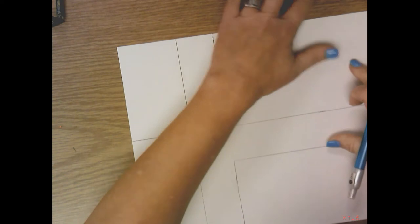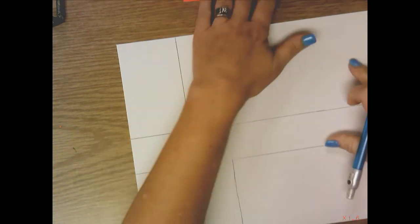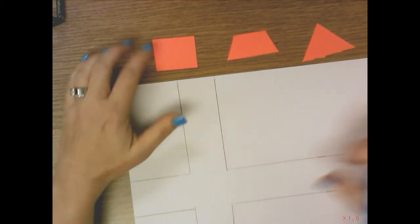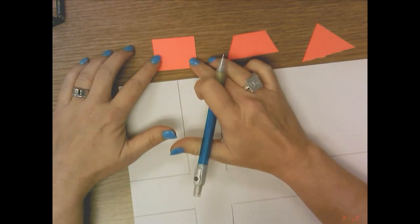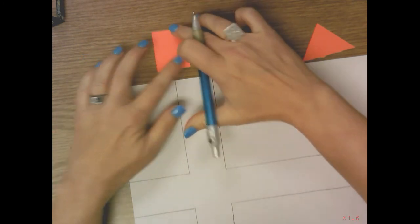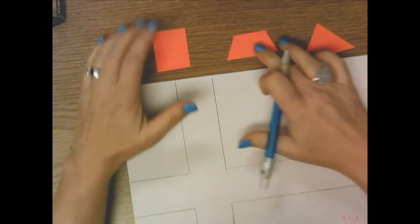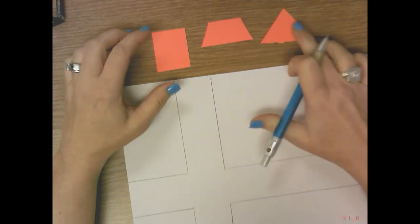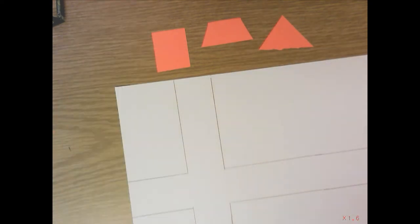I have created three tag board patterns for you. We have a rectangle, which is a building. Your building could go horizontally like this, or you could turn it and it could be a taller building vertical. And then you have two roof shapes: this trapezoid shape and this triangle shape.